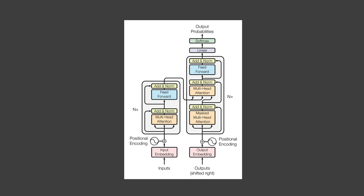In the encoder stage, the layers each carry the same input sequence after it has been embedded and augmented by positional information. On the decoder side, the queries, keys, and values fed into the first attention block represent the target sequence after embedding and positional augmentation. The second attention block of the decoder receives the encoder output as keys and values, and the normalized output of the first decoder attention block as the queries. It therefore produces a representation with attention scores for each target sequence word that captures the influence of the input sequence as well.